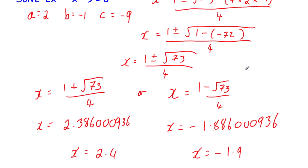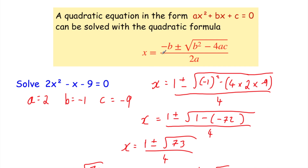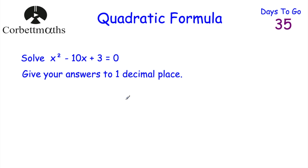So we've solved that quadratic equation using the quadratic formula. The formula is given to you on the formula sheet, but it's important that you're able to use it. Knowing that the 4ac part is useful to put in brackets is quite helpful, and remembering that if you have minus 1 squared, put that minus 1 in brackets when typing into your calculator — otherwise it might give the wrong answer. Now here's a question for you to try. The question says solve x squared minus 10x plus 3 equals zero, and give your answers to one decimal place. Feel free to pause the video and try this.